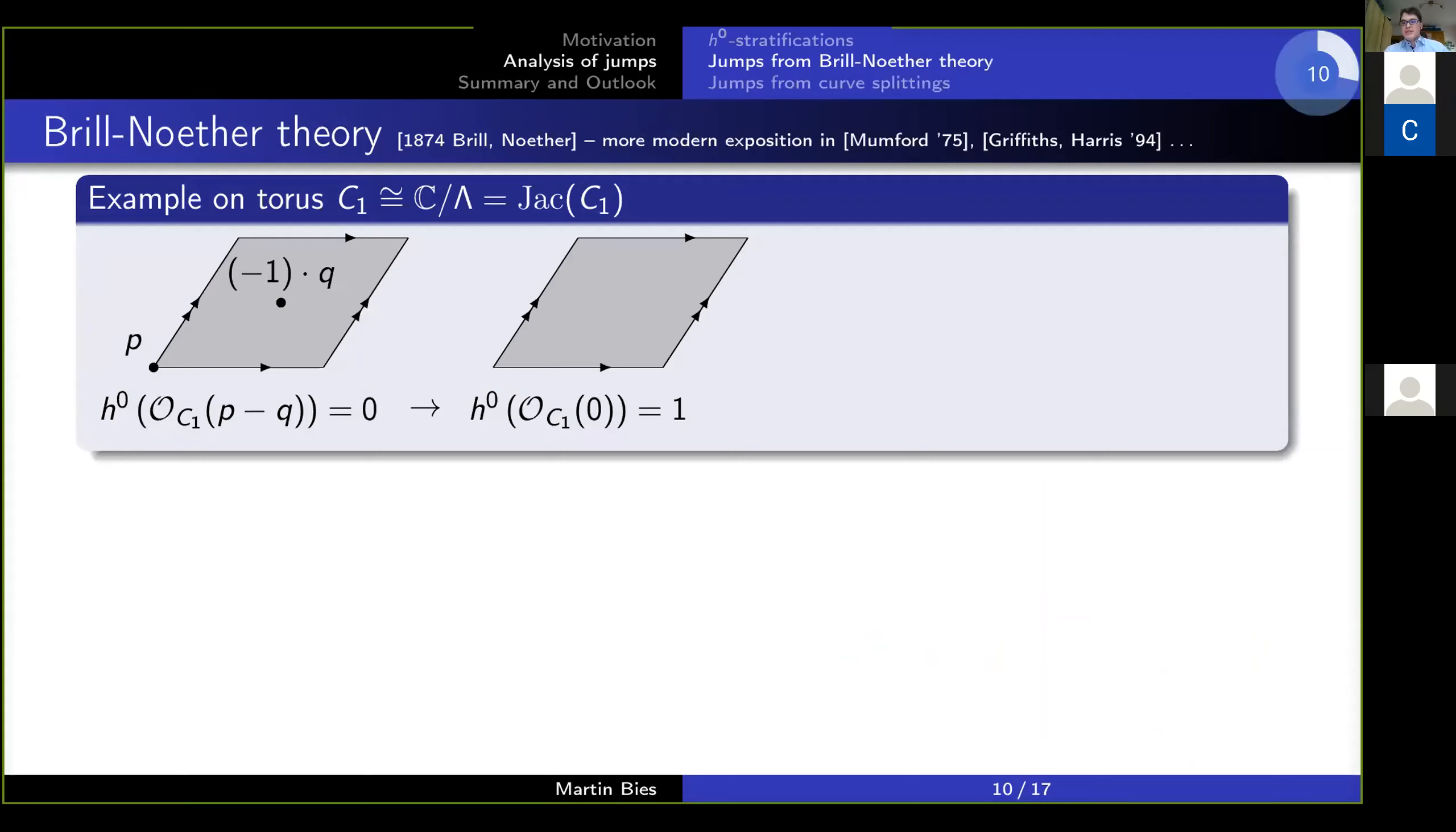The standing example would be on the torus. Then let me take a divisor of the form P minus Q. So the sections of this bundle are all functions that have a zero in P and a pole in Q of at most order one. Let me also fix P equals zero. Then theory tells me there is no section. There is no such function on the torus that has these vanishing properties.